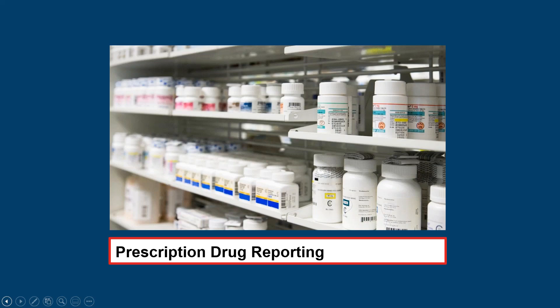Before getting into the prescription drug reporting requirements, I wanted to step back and talk about where this came from. Section 204, Division BB of the Consolidated Appropriations Act amended the Internal Revenue Code, ERISA, and the Public Health Service Act to include certain reporting requirements for group health plans and other health plan issuers. The majority of the reporting requirements enacted through this section were prescription drug-related.